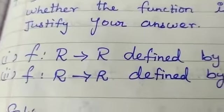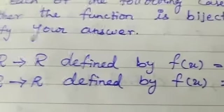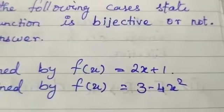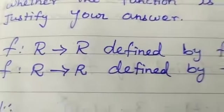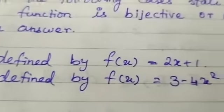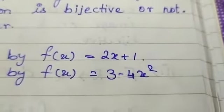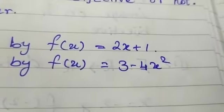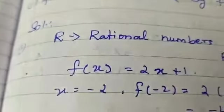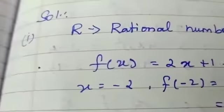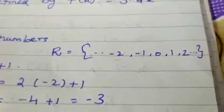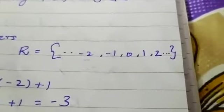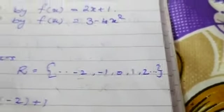Our first part: the function is R to R defined by f(x) = 2x + 1. The second part: the function is R to R defined by f(x) = 3 - 4x². R belongs to the rational numbers, starting from negative infinity to positive infinity, including 0.